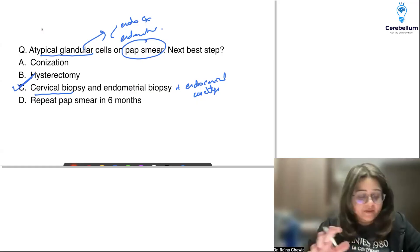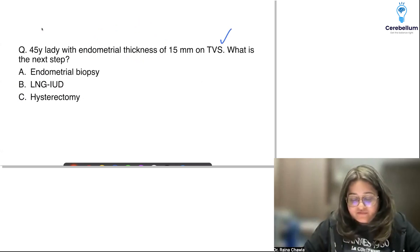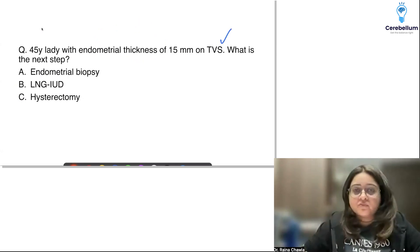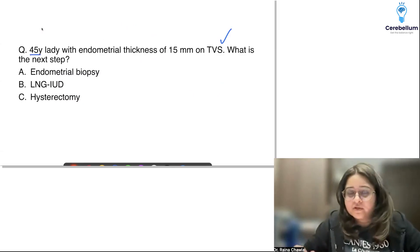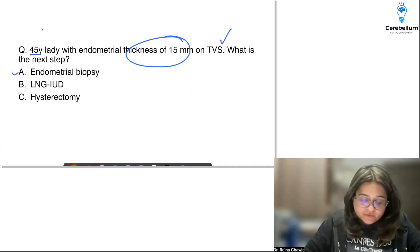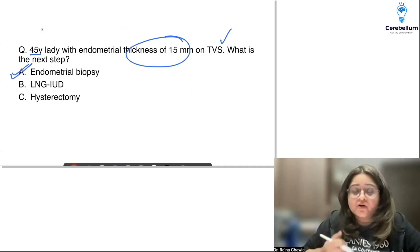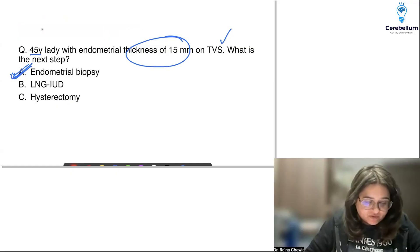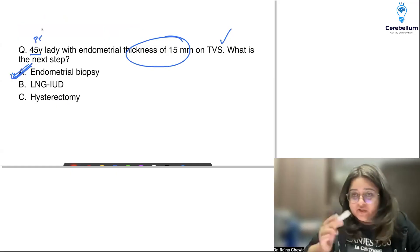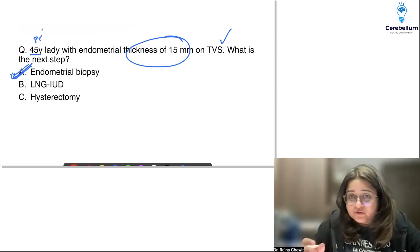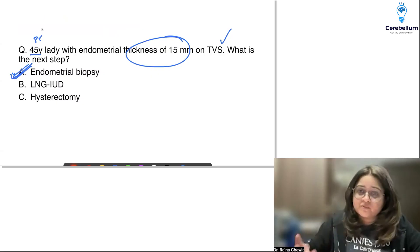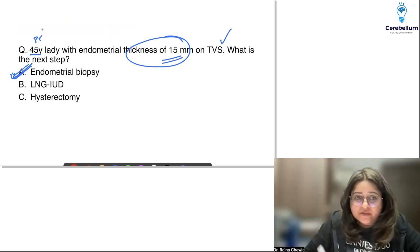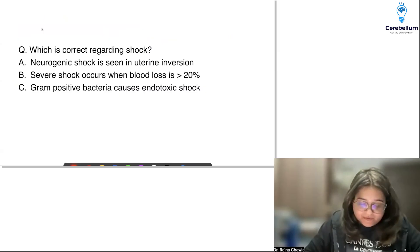A very often-asked question: 15mm thickened endometrium in a perimenopausal woman, or any woman above 40, or any woman in the reproductive age group with a thick endometrium — what should you do? You should do an endometrial biopsy. We're thinking of hyperplasia, and hyperplasia is always a histopathological diagnosis. She was 35 years old, but irrespective of age, any woman in the reproductive age group with endometrial thickness more than 12–15mm must be biopsied.